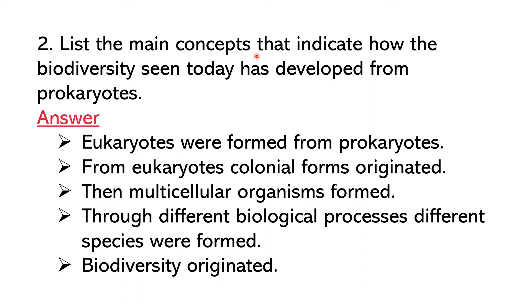List the main concepts that indicate how the biodiversity scene today has developed from prokaryotes. The progression goes: prokaryotes → eukaryotes → colonial forms.